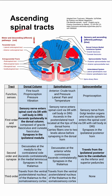Here are some notes on ascending spinal tracts. These are of course sensory tracts in the spinal cord. We'll divide into three groups: the dorsal column shown here, the spinocerebellar tract shown here, and the spinothalamic tract shown down here.